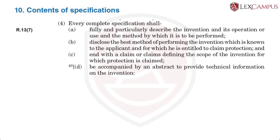Section 10(4) describes the various parts and functions of a complete specification. 10(4)(a) tells us that the complete specification shall fully and particularly describe the invention and its operation or use and the method by which it is to be performed. The complete specification also has to disclose the best method of performing the invention which is known to the applicant and for which he is entitled to claim protection.